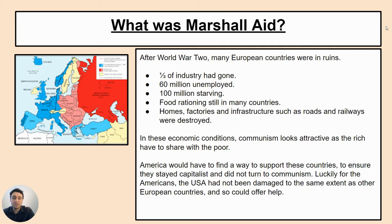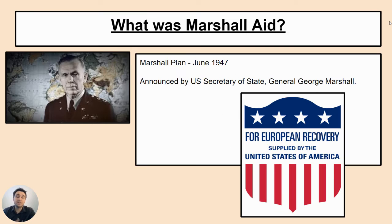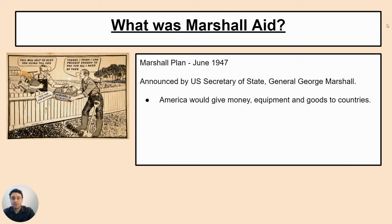Luckily for the Americans, the USA had not been damaged to the same extent as other European countries, so they could offer help — they had the finances to support Europe. This is where the Marshall Plan, or Marshall Aid, comes in — announced in June 1947 by the US Secretary of State, General George Marshall. The plan was that America would give money, equipment, and goods to countries that requested them, supporting them until they got back on their feet.